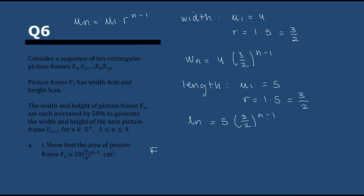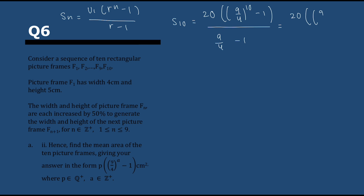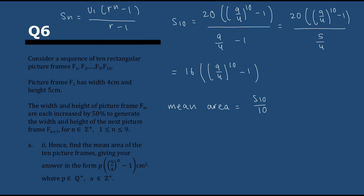Then it's asking for the mean area of the 10 picture frames. We calculate the sum of the first 10 terms using the geometric series formula. u₁ is 20, r is 9/4, and n is 10. Simplifying the denominator: 9/4 − 1 = 5/4. Dividing 20 by 5/4 gives 16, so the sum is 16 × ((9/4)^10 − 1). The mean is the sum divided by 10: (16/10) × ((9/4)^10 − 1). So p = 16/10 and a = 10.